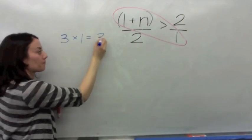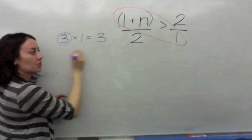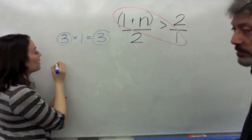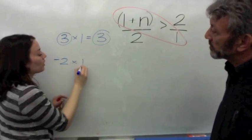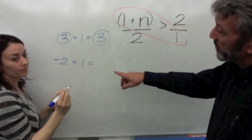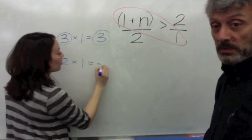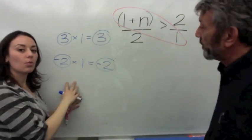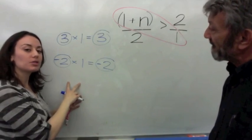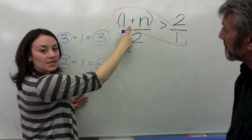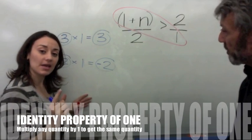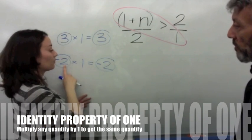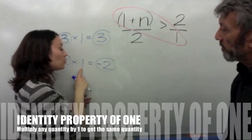Yeah. 3 times 1 is 3. Right. Is 3 identical to 3? Are they the same? They're the same. Okay. They're the same. What if I ask you what is negative 2 times 1? What would you tell me? I think that should be negative 2. Negative 2. Is negative 2 identical to negative 2? Exactly the same. So, what we call this. When you multiply any quantity by 1, that is called the identity property of 1. You're going to get a number that is identical when you multiply it by 1.